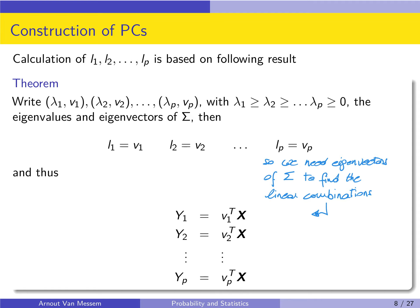The only thing to pay attention to is that you always order the principal components in decreasing order: y1 uses the eigenvector corresponding to the largest eigenvalue, y2 corresponds to the second largest eigenvalue, and so on.